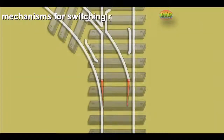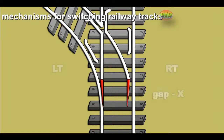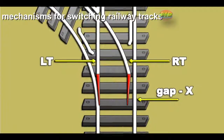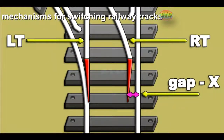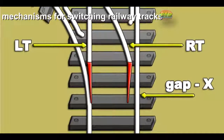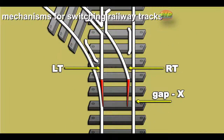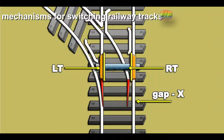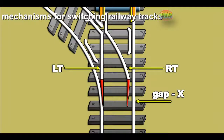Mechanisms for switching railway tracks. The following animation shows how one section of track is smoothly transformed into two sections. There are two moveable tapering rails in the middle — one towards the left and the other towards the right. Let us call them LT and RT respectively. Note the gap between the right rail and RT, and that the left rail smoothly merges with LT. Gap X allows the wheel to roll over this assembly without obstacles. One wheel goes over LT and the other on the rail towards the right, thus the carriage goes straight in this situation.